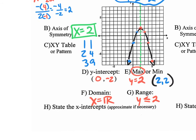State the x-intercepts — approximate if necessary. We haven't yet learned the skills to give exact values. The parabola crosses the x-axis — it's definitely between 0 and 1, so approximately 0.6. And it looks like it crosses again at around 3 and a half, so approximately 3.5. Use the squiggly equals sign to indicate approximation.